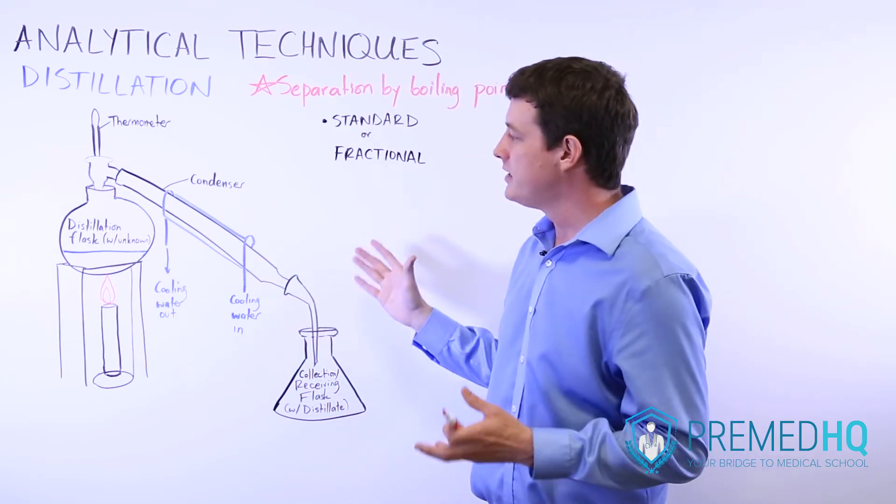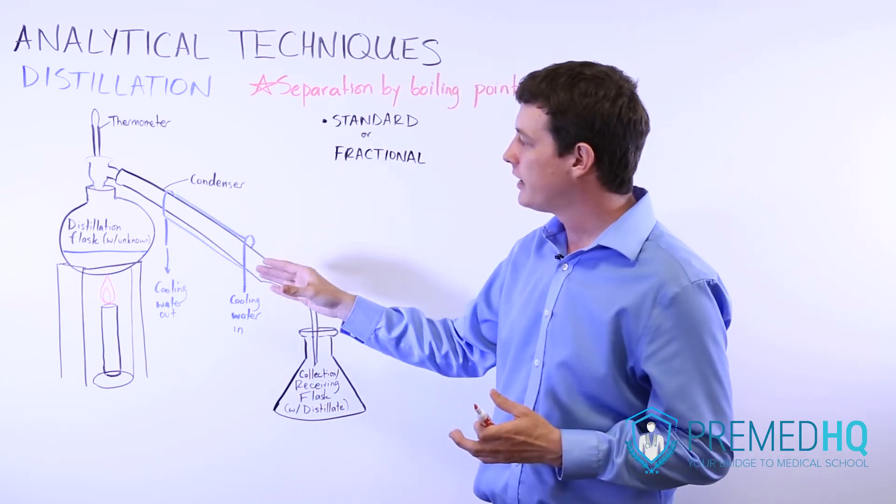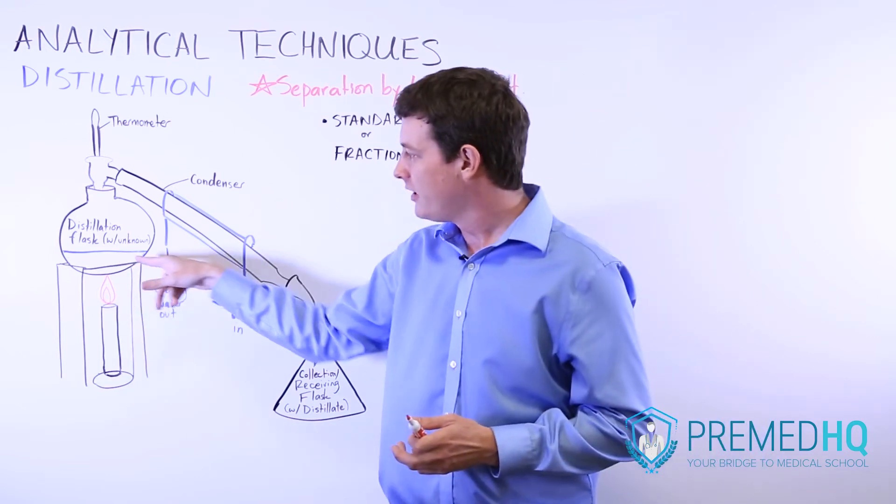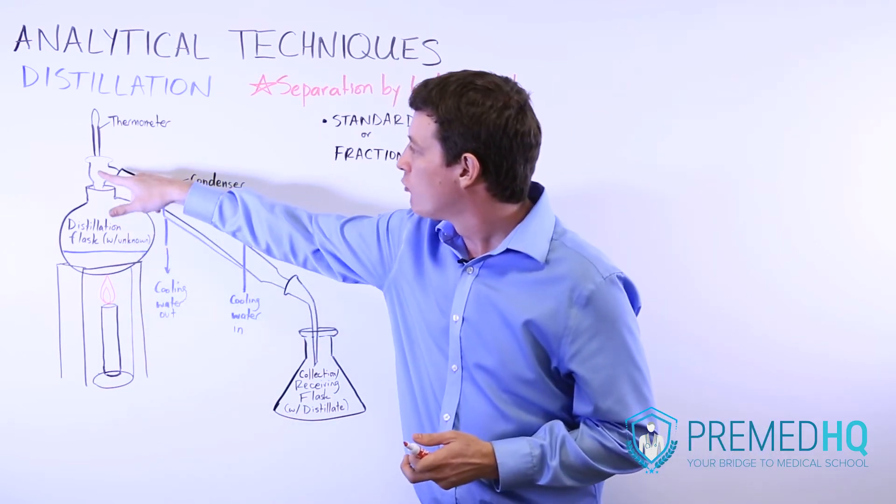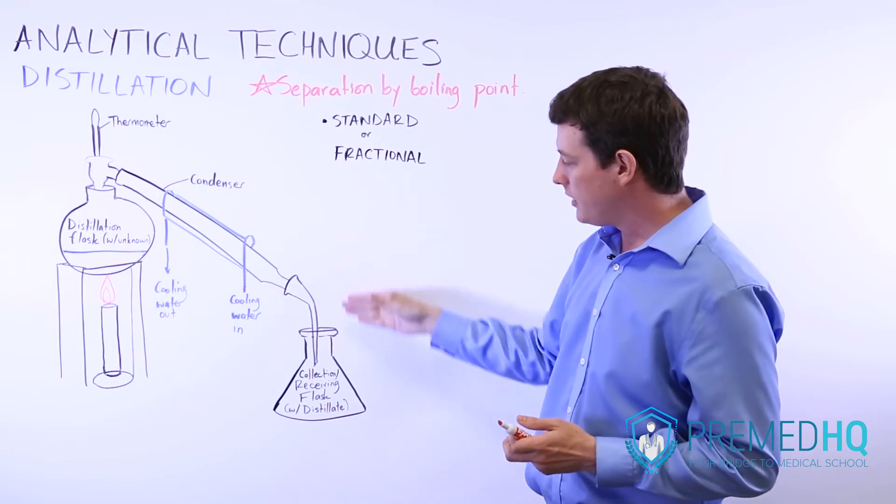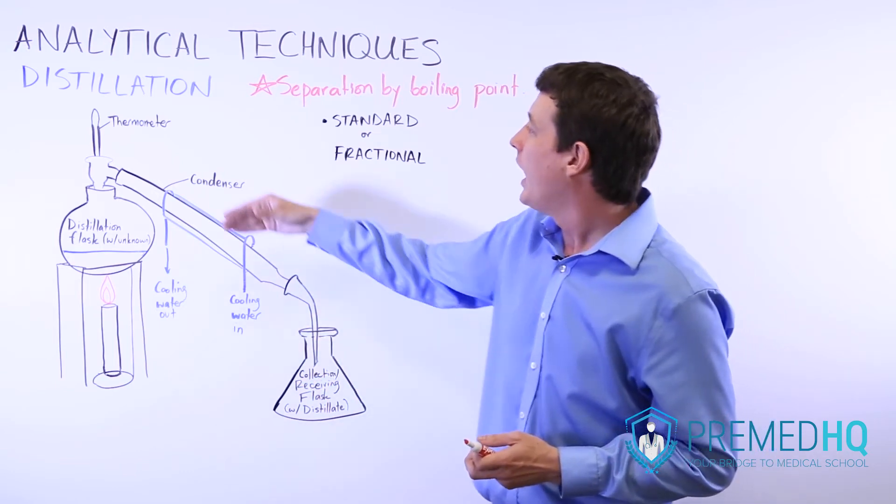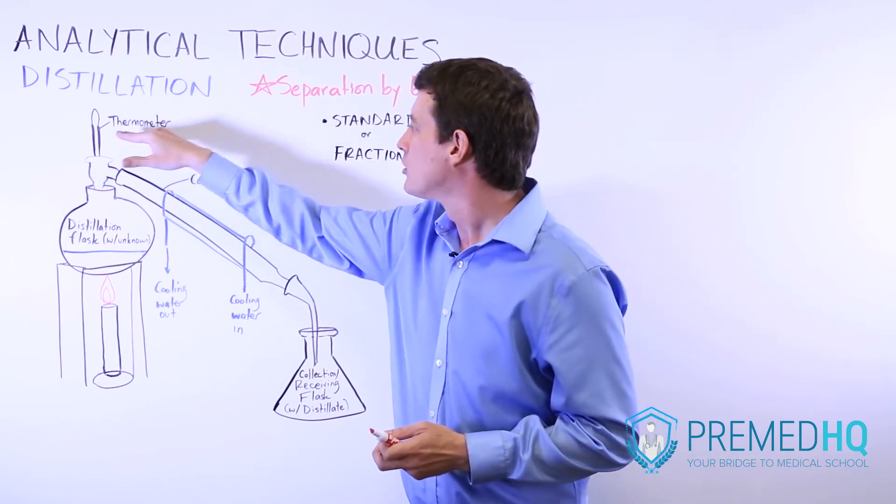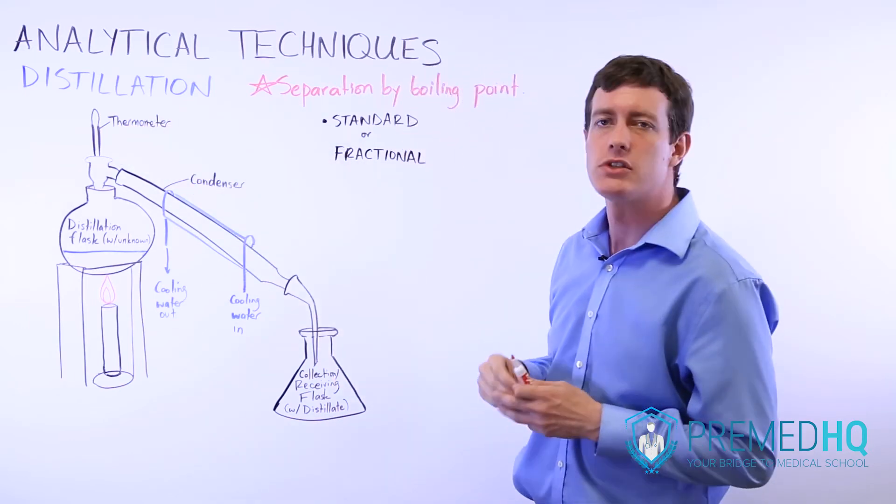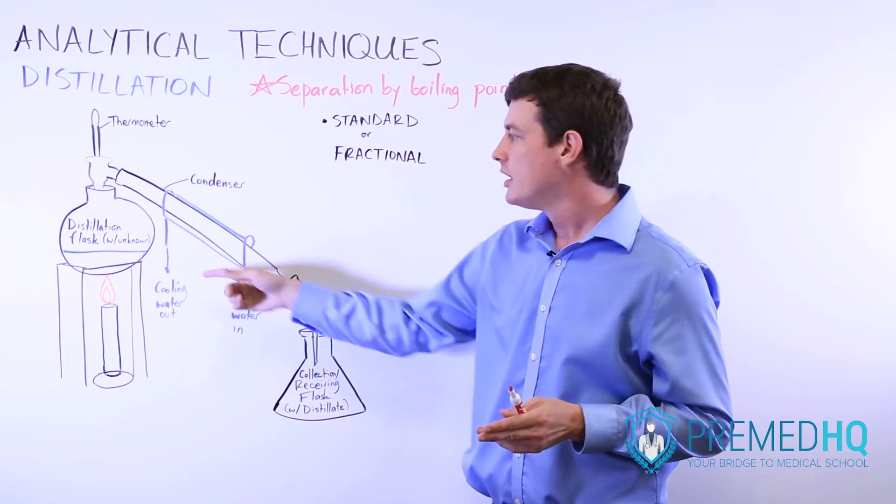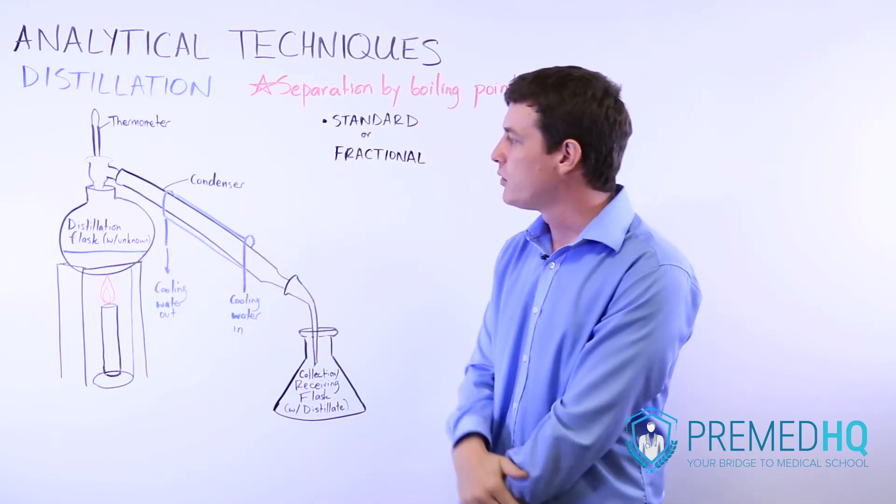Essentially the way distillation works is you need to find a way to heat your unknown. You need to have that rise and then recondense. You need to collect it in some way. And you need to have some thermometer or something that helps you recognize the temperature at which these unknown compounds boil.